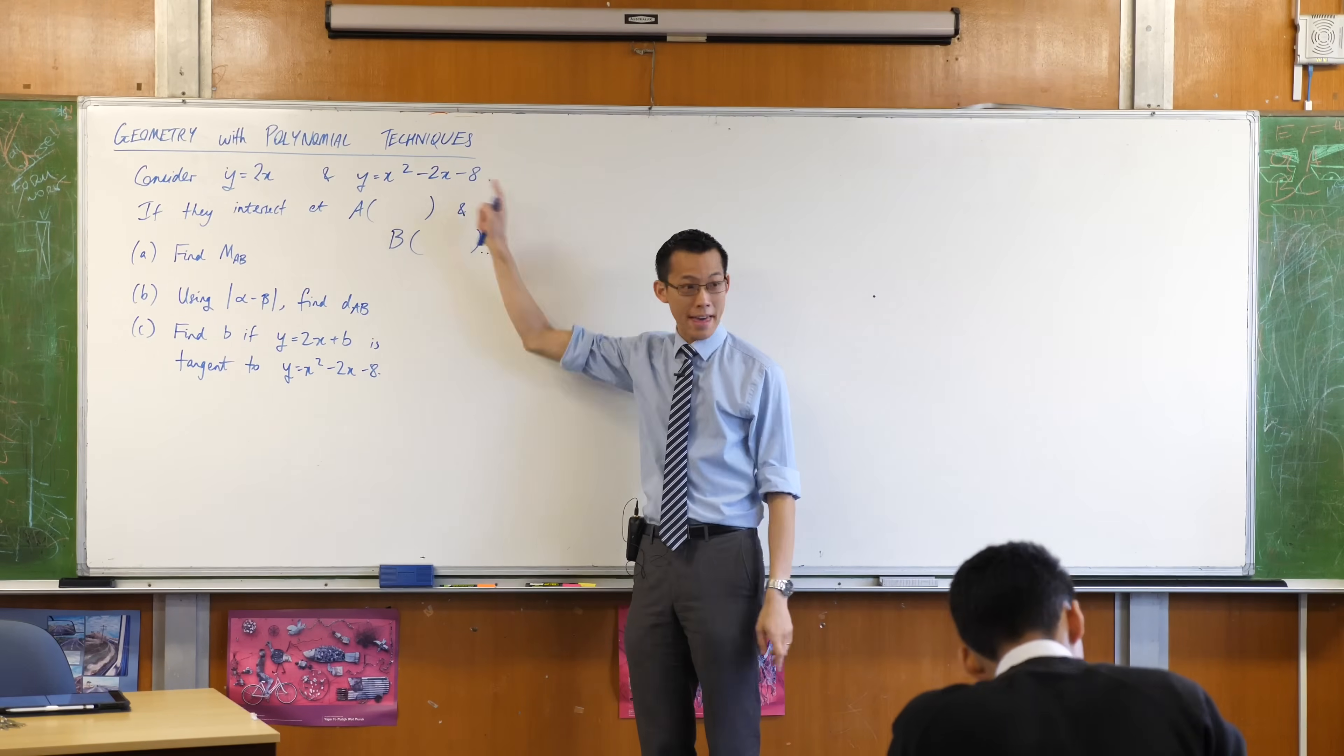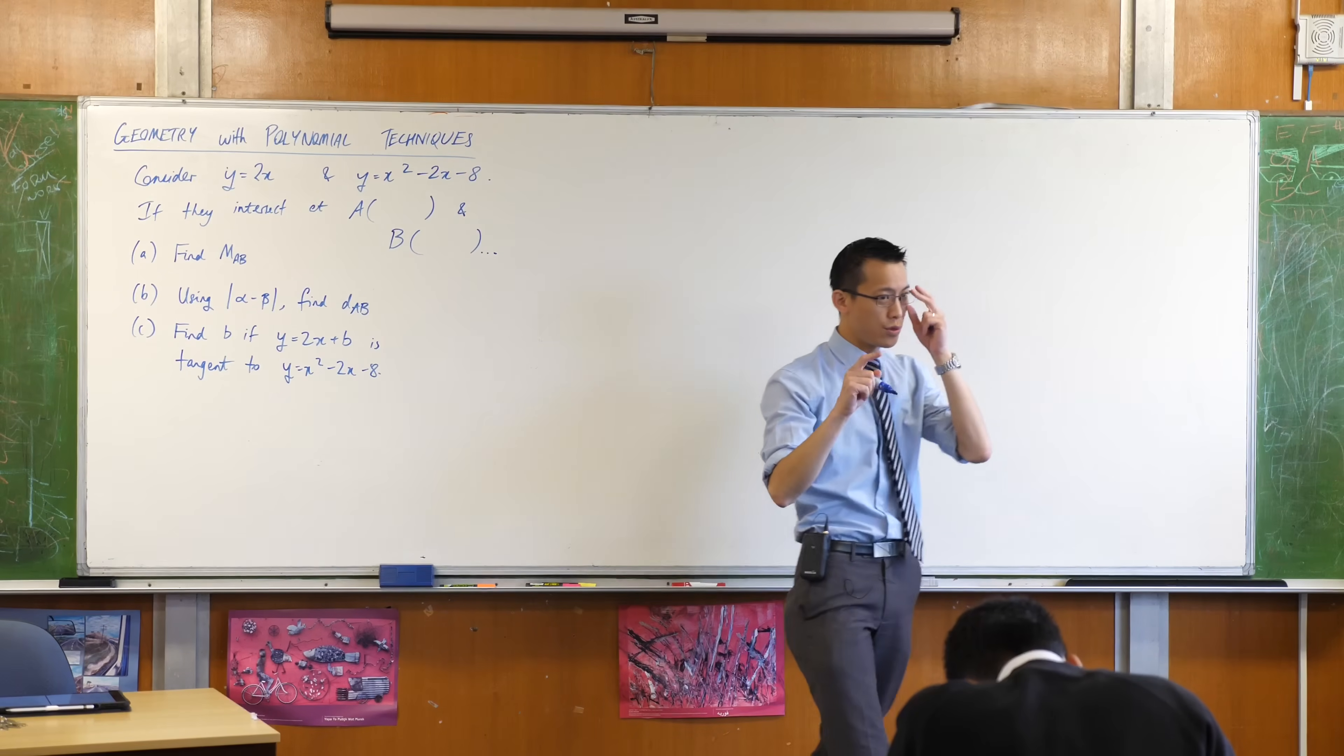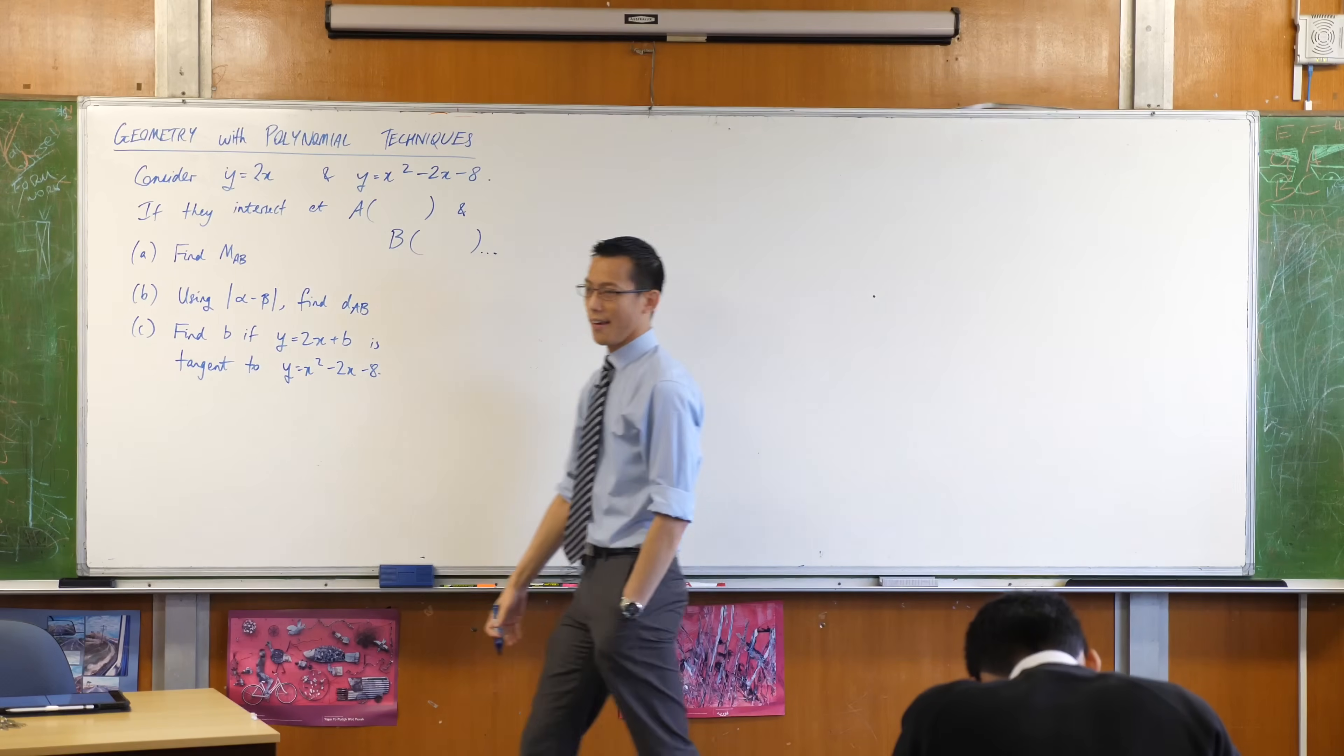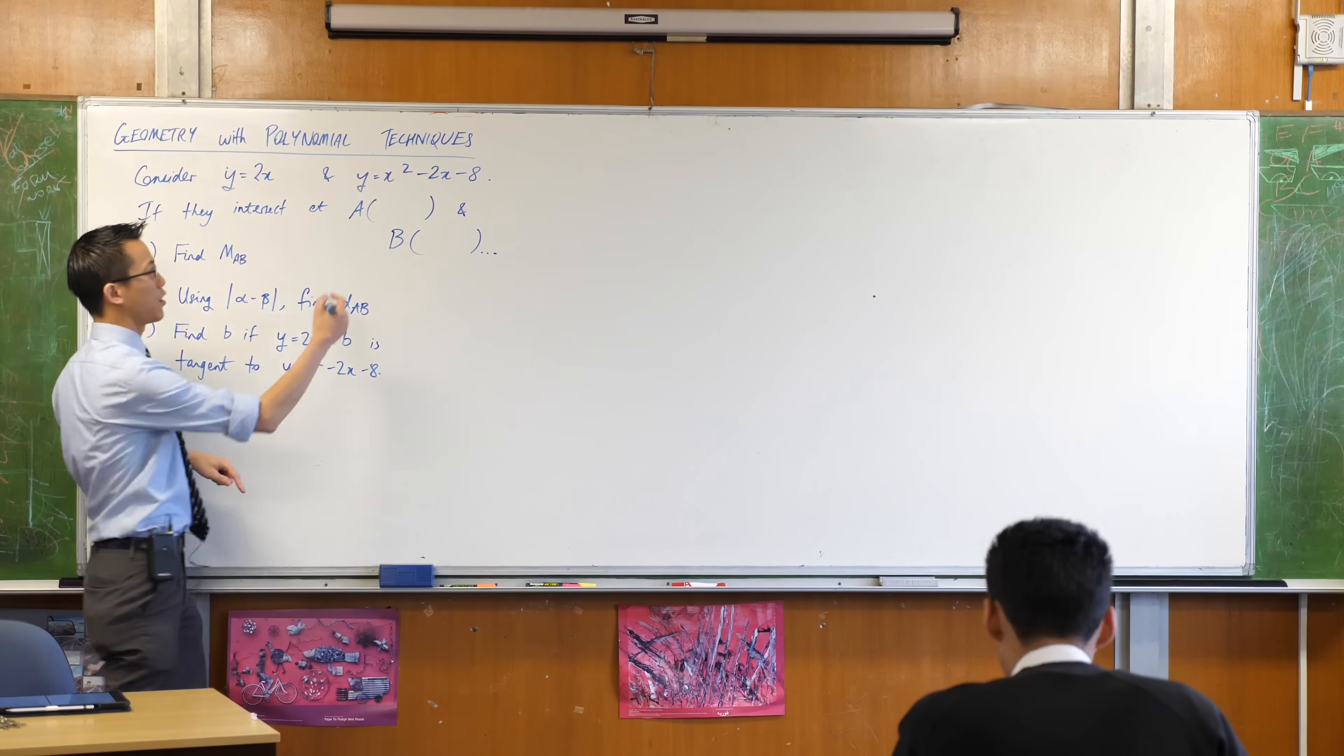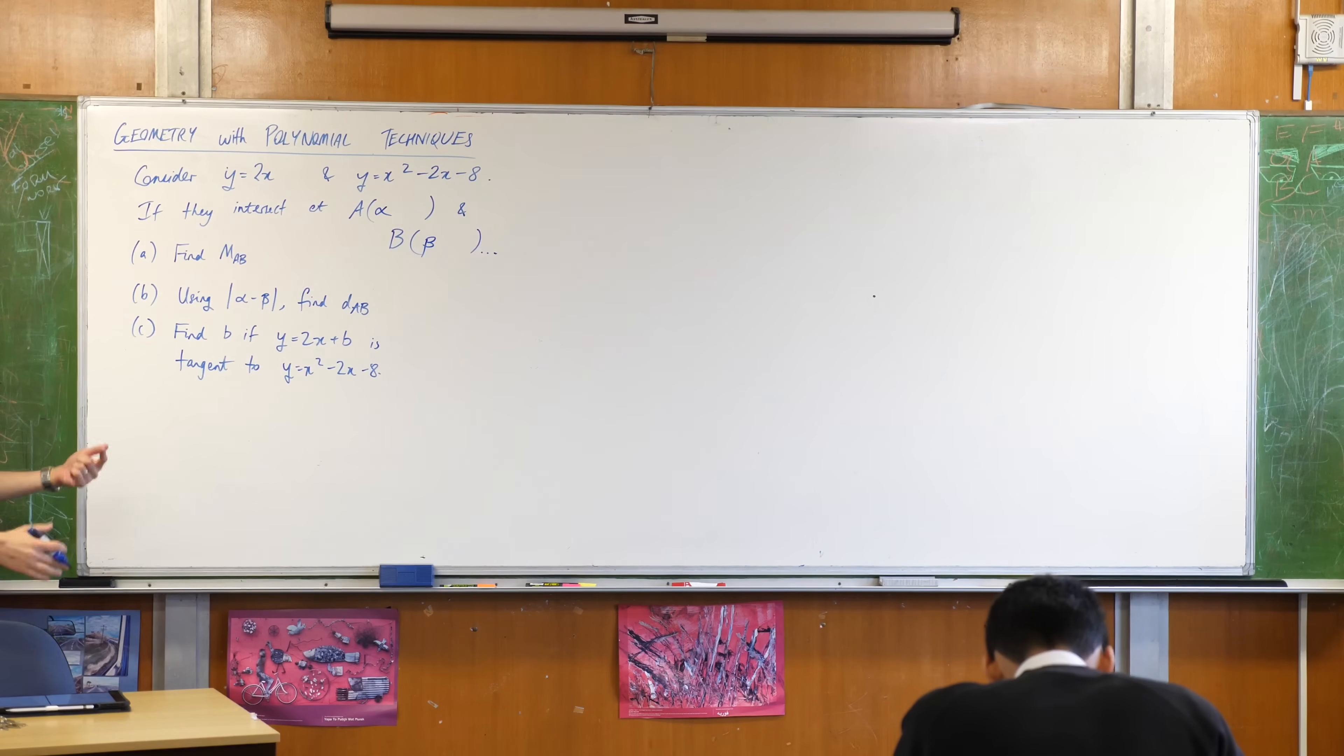Since we're going to have a quadratic to solve to find these points of intersection, those two solutions to that quadratic are going to be my points of intersection. They'll be roots of a quadratic - the two x values. We usually call roots when you've got a quadratic alpha and beta. So I'm going to call the x coordinates of our points of intersection alpha and beta.